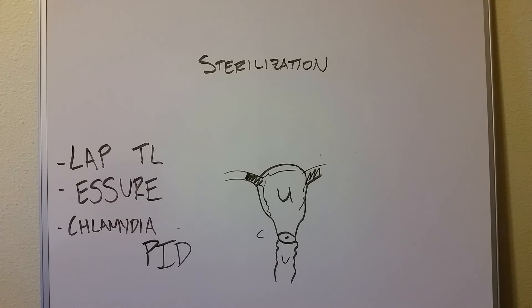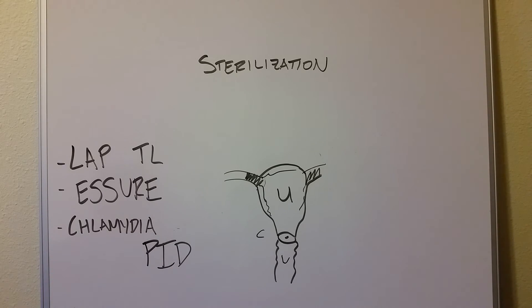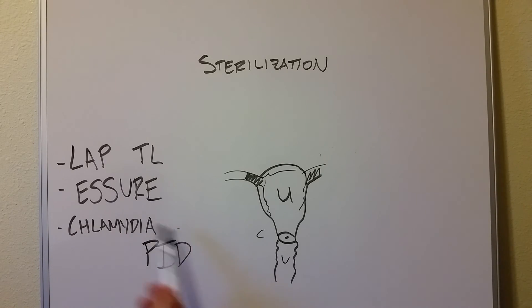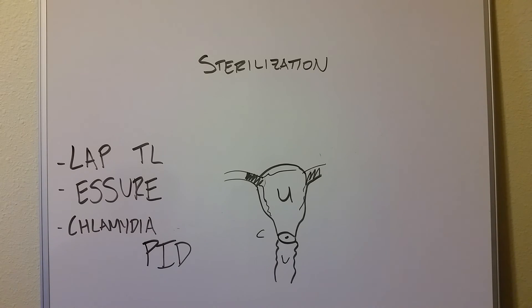Once that obstruction is there, it's very hard to correct. If you have a very bad chlamydia infection that leads to a PID-type obstruction of that fallopian tube, it's very unlikely — if it's bilateral — that the patient will be able to get pregnant again. Even if you cleared up the chlamydia with antibiotics, that pelvic inflammatory disease scarring will last. A classic boards question, for example, would be a childbearing-age female with a history of chlamydia infections who now cannot seem to get pregnant — she had a chlamydia infection five years ago, it went untreated too long, and now she still can't get pregnant. That's what they'll want you to answer: pelvic inflammatory disease.